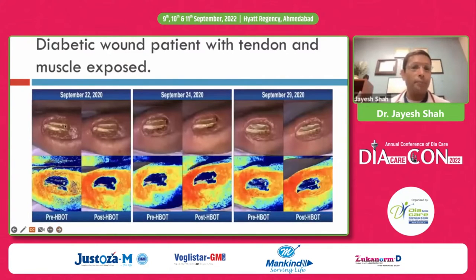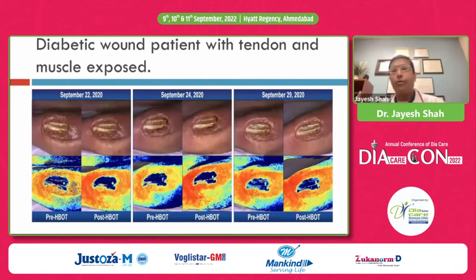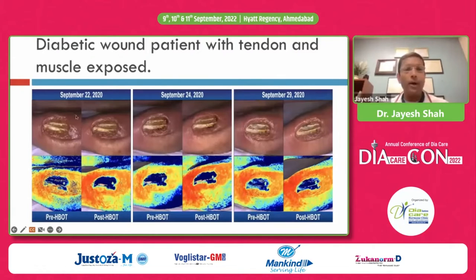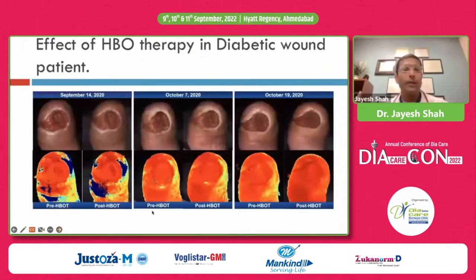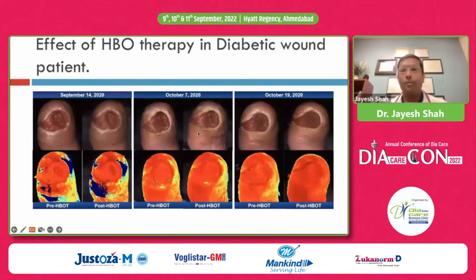This is another one with tendon exposed. We are doing incremental tracking every day from September 22 to 24 to 29, as you see, by daily hyperbaric oxygen therapy — is there any continuous increase in oxygenation? We find that not only is there an increase pre and post hyperbaric, but incrementally when you are seeing it week after week, you find that there is an increase in oxygenation, as you see in these slides from the 22nd to the 24th to the 29th. This is another patient where we did hyperbaric oxygen therapy and followed the oxygenation pre and post HBOT to see if there is an incremental rise. From September 14 to October 7 to October 19, there is an increase in oxygenation. That's pretty neat.